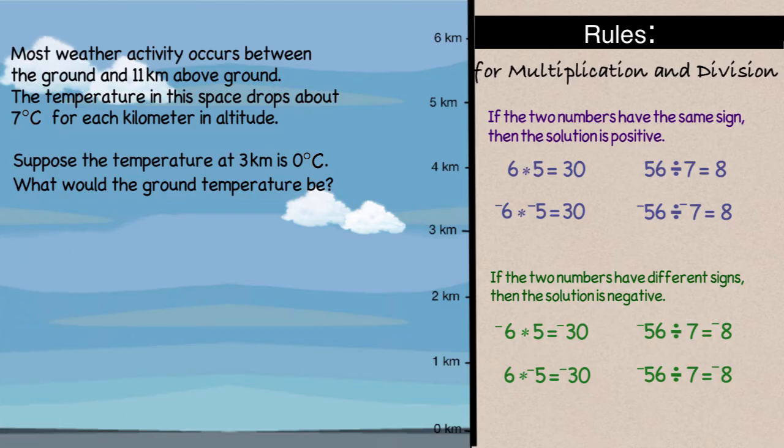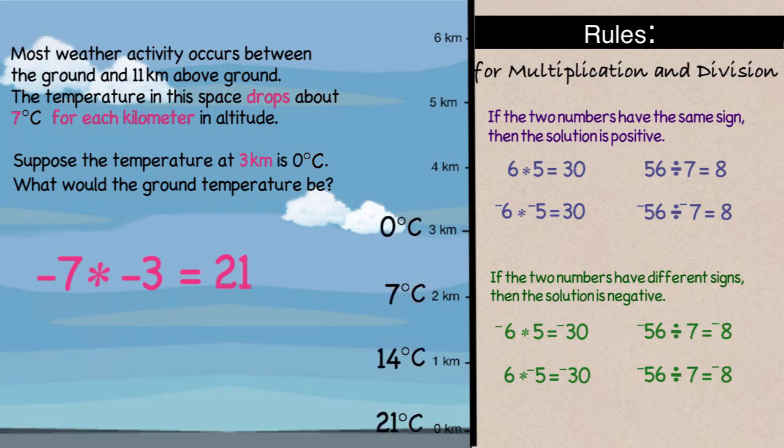We're talking about a situation where we'll be going down 3 kilometers. So, the distance is negative 3 kilometers, and our problem would be negative 7 degrees Celsius times the negative 3. And that means we'd expect the temperature on the ground to be a positive 21 degrees Celsius.